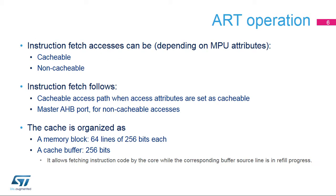The instruction fetch accesses can be qualified as cacheable or non-cacheable depending on MPU attributes. For cacheable accesses, the instruction fetch follows the cacheable access path. Non-cacheable accesses are directed to the master AHB port, following the non-cacheable access path. The appropriate access path is selected with the AHB switch, controlled by the cache manager.